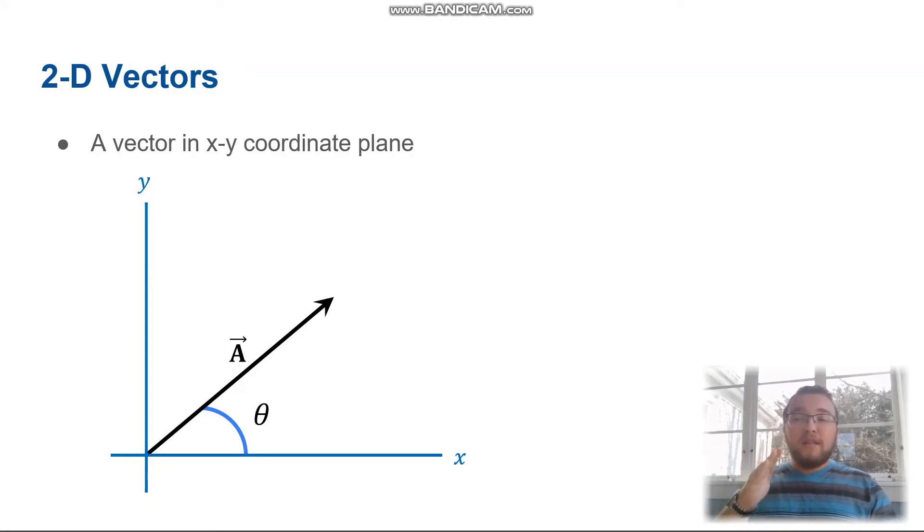And it's between the vector and the x-axis. We can call the angle something else, like alpha or phi or any other name we want. But we can also label an angle between the vector and the y-axis instead of the vector and the x-axis. We just need to have a specified angle.